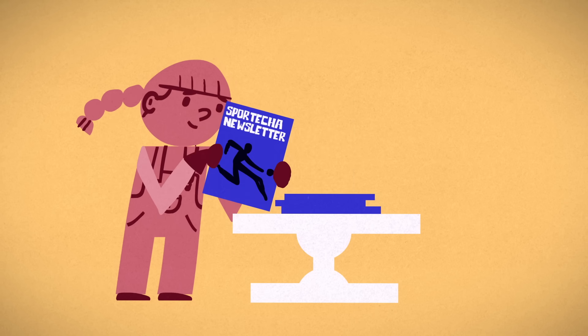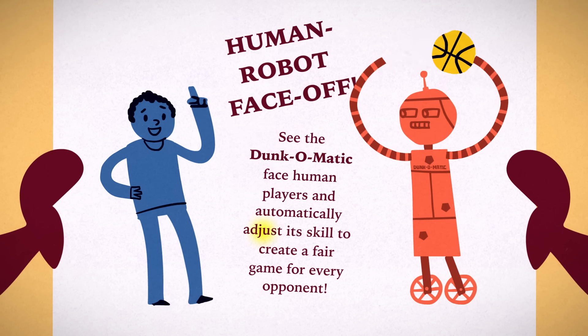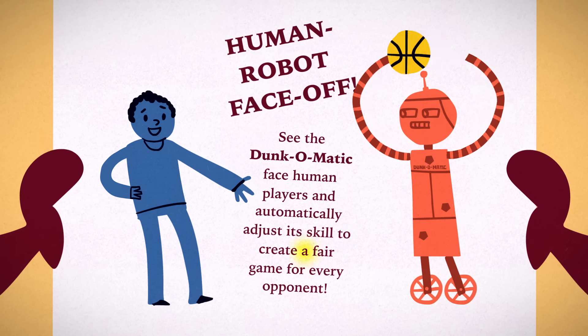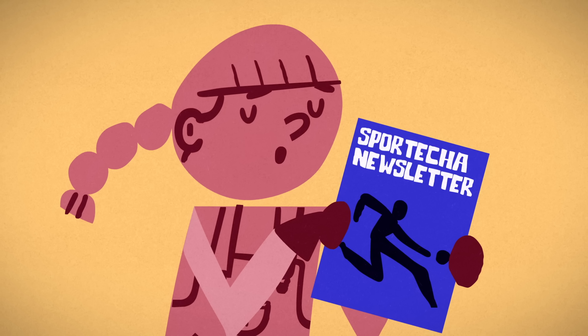Until you read an advertisement: see the Dunk-O-Matic face human players and automatically adjust its skill to create a fair game for every opponent. That's not what you were told to create.